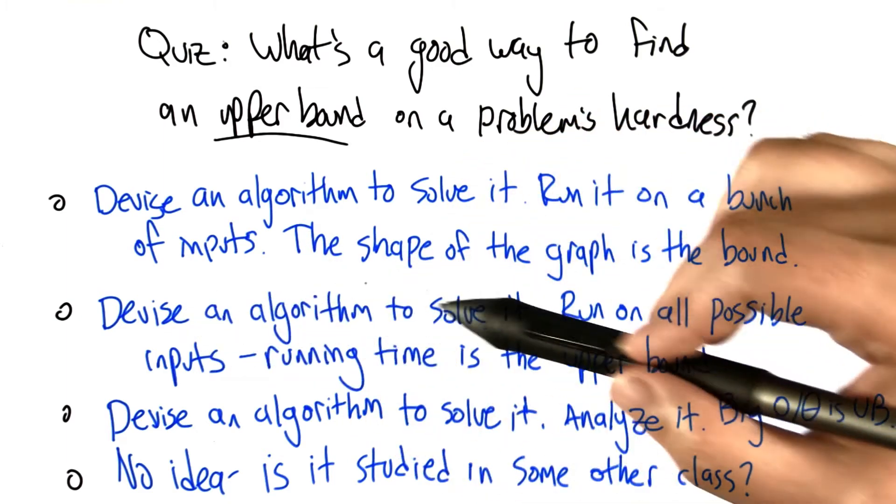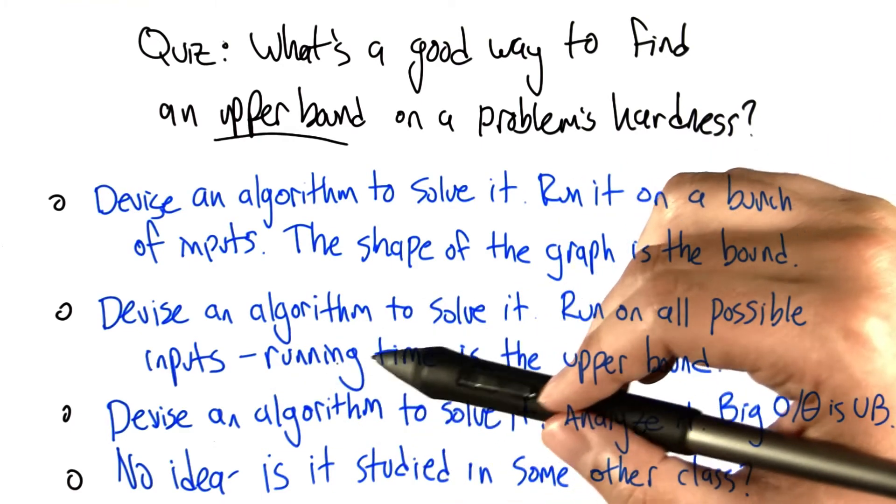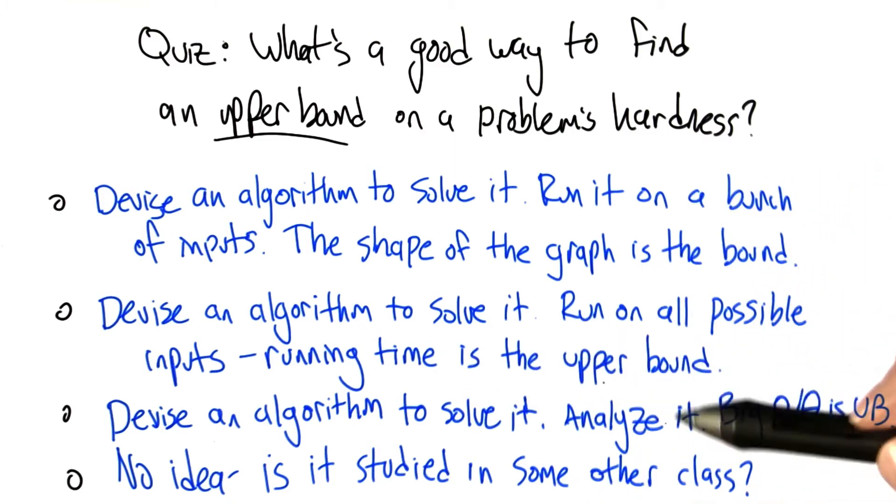Another choice is, again, devise an algorithm to solve it, run that algorithm on all possible inputs, and take a look at the running time that results from this. That gives you the upper bound.